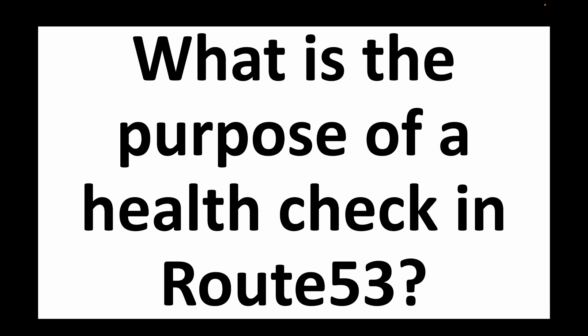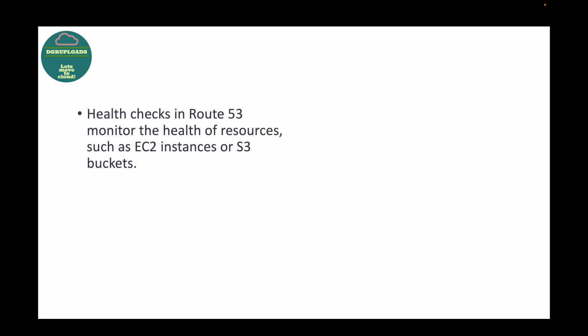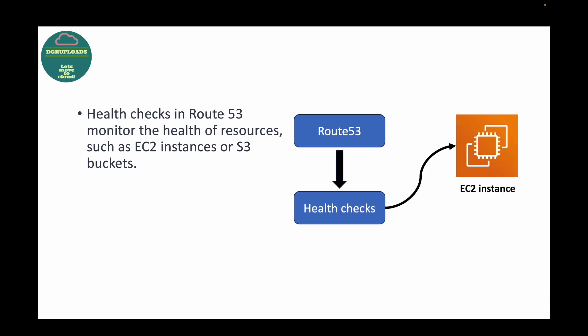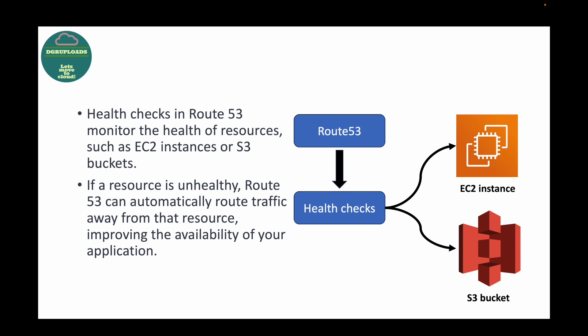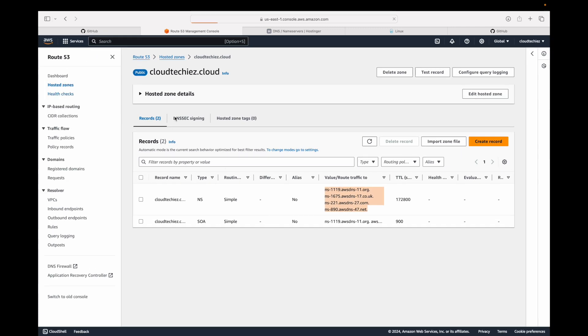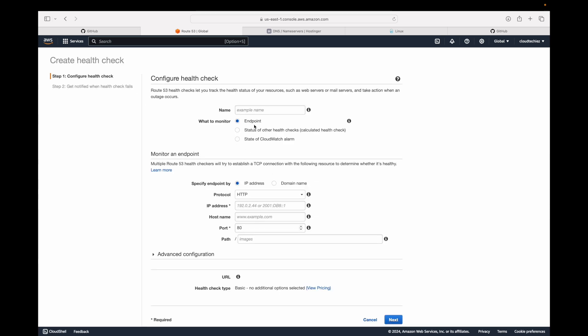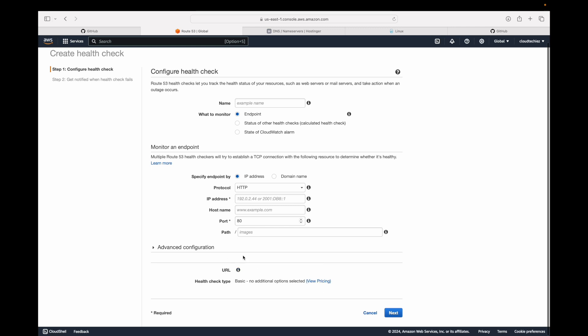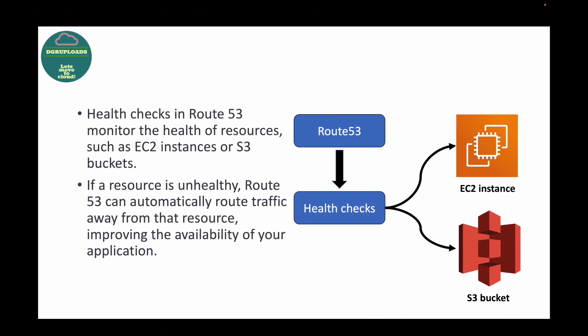Question 6: What is the purpose of a health check in Route 53? Route 53 can perform health checks on your resources — such as an EC2 instance or an S3 bucket — to verify whether those resources are working as expected. If a resource becomes unhealthy, Route 53 will stop routing traffic to it, improving the availability of your application. In the Route 53 console, under Health Checks, you can specify the URL to monitor and attach health checks when creating records.